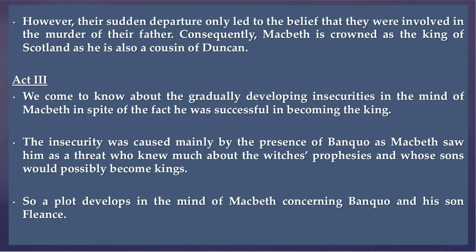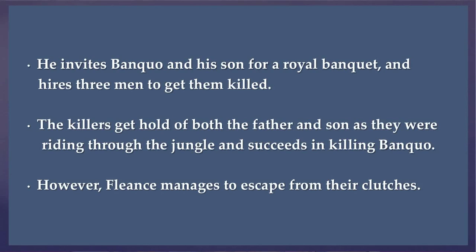That brings us to Act 3. We come to know about the gradually developing insecurities in the mind of Macbeth in spite of the fact he was successful in becoming the king. The insecurity was caused mainly by the presence of Banquo, as Macbeth saw him as a threat who knew much about the witches' prophecies and whose sons would possibly become kings. So a plot develops in the mind of Macbeth concerning Banquo and his son, Fleance. He invites Banquo and his son for a royal banquet and hires three men to get them killed. The killers get hold of both father and son as they were riding through the jungle and succeed in killing Banquo. However, Fleance manages to escape from their clutches.